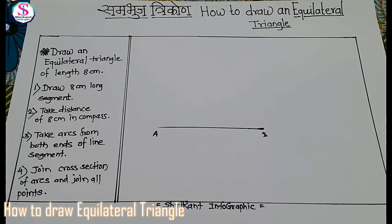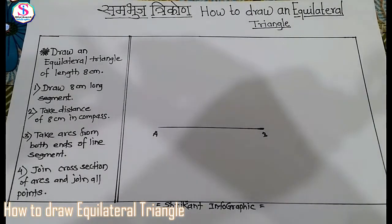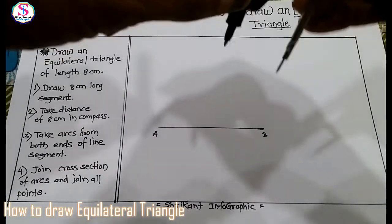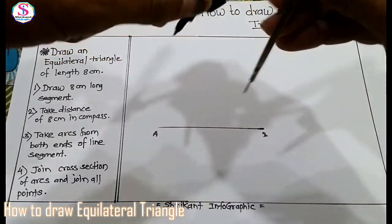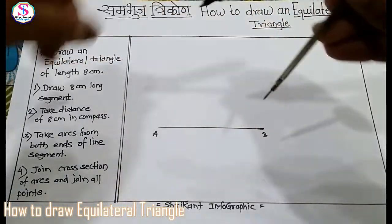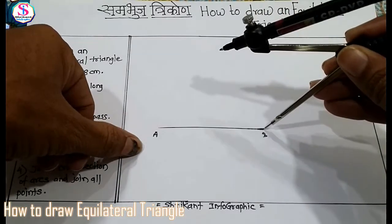So this triangle is an equilateral triangle. All sides of this triangle are equal to 8 cm.